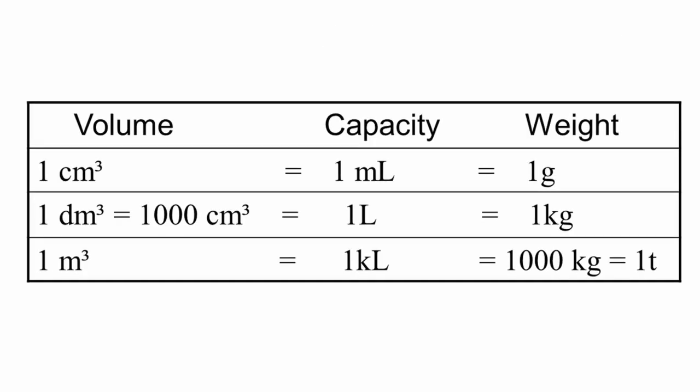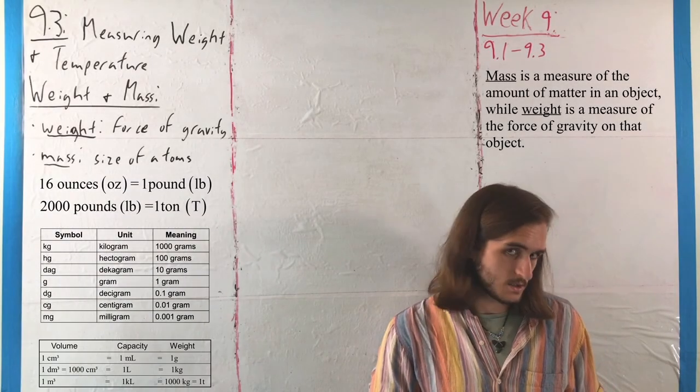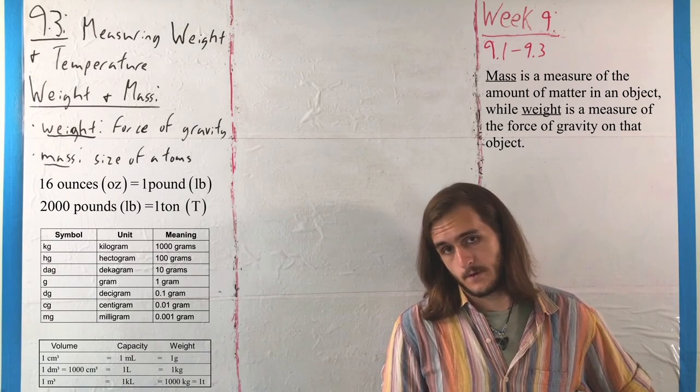And, for the record, we can also talk about weights and volumes and capacities in the same sorts of way. Where we have that one cubic centimeter is equal to one milliliter is equal to one gram. One decimeter cubed, it's a rare unit, is equal to 1,000 cubic centimeters, which is one liter, which is one kilogram. And one cubic meter is equal to one kiloliter is equal to 1,000 kilograms, which we call a metric ton. You don't see the metric tons quite as often, but that's where those come from.